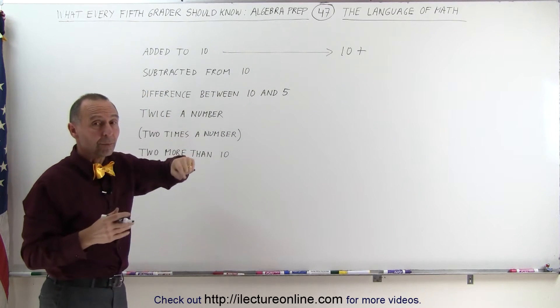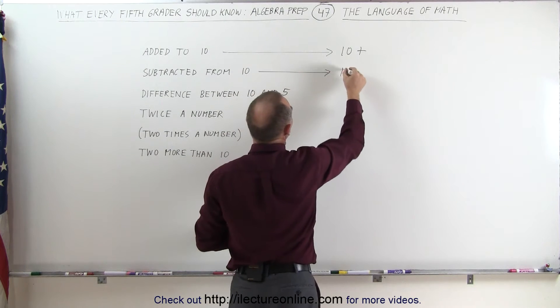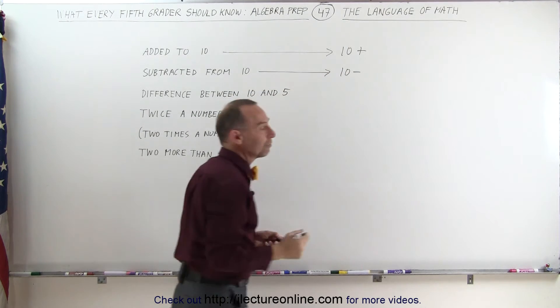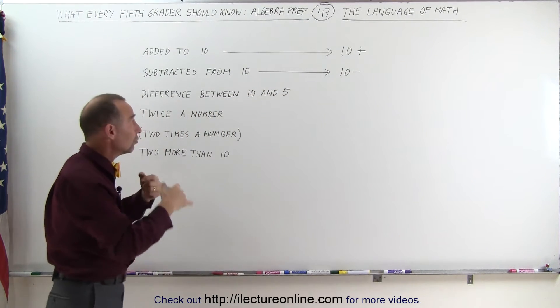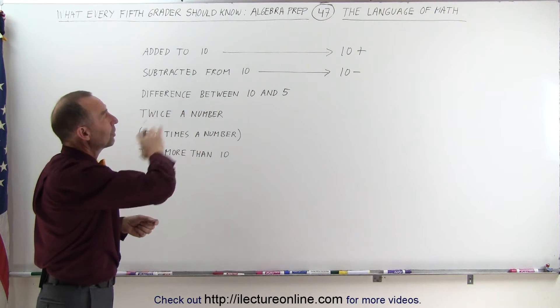If you say subtracted from a number, in this case the number 10, then you would write this as 10 minus whatever you subtracted from 10. So added to means you add something to the number 10, subtracted from means you're going to subtract something from the number 10.